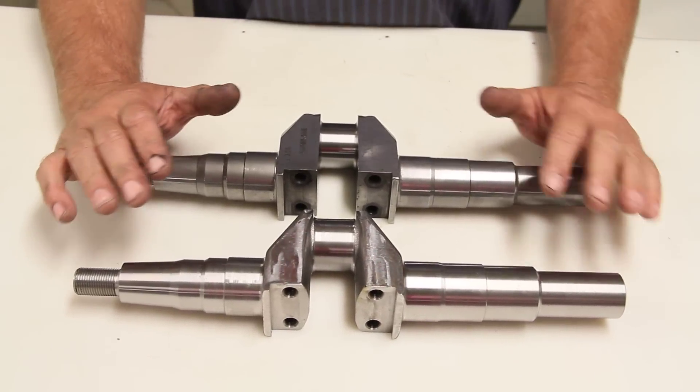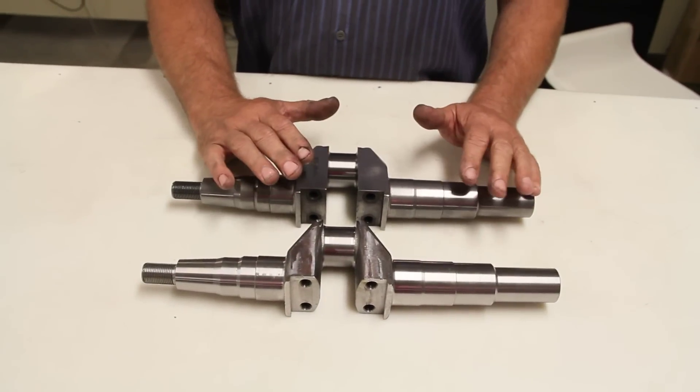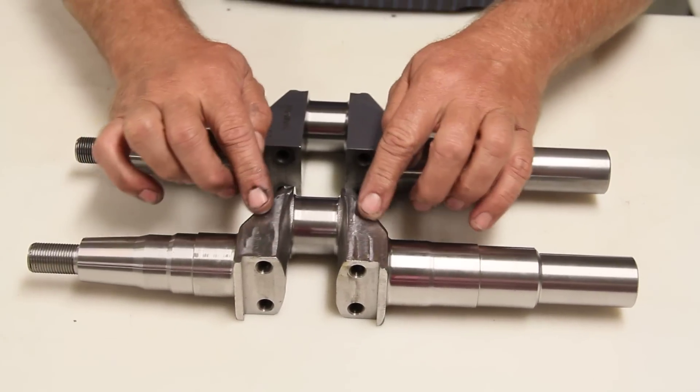Today we're going to talk about the differences between the forged steel crank and the billet steel crank. Both made out of the 4340 material, but the main differences are the thicknesses of that throw here.